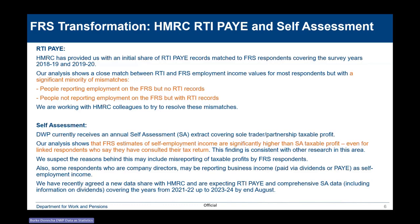We suspect the reasons behind this may be due to misreporting taxable profits by FRS respondents, and also some respondents may actually be company directors reporting self-employment income which is actually paid via dividends or PAYE. But we don't have the detailed self-assessment information currently to work out what's actually going on. I'm very pleased to say — and this has happened since we published in March — that we have a signed agreement now with HMRC for RTI information up to 23/24 and a comprehensive self-assessment data set, including information on dividends, savings and property income, covering years up to 23/24, and we're expecting that information from HMRC by the end of August, setting us up for our main work on RTI and self-assessment in the autumn.